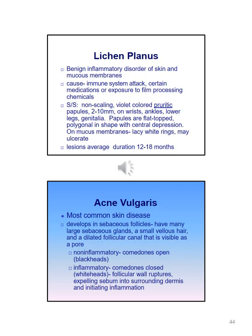Lichen planus is a benign inflammatory disorder of the skin and mucous membranes. The cause is unknown; however, factors that may contribute include an immune system attack, certain medications, or exposure to film processing chemicals. Signs and symptoms include non-scaling, violet-colored, pruritic papules 2 to 10 millimeters in size, usually found on the wrists, ankles, lower legs, and genitalia. The papules are flat-topped and polygonal in shape. On mucous membranes, lacy white rings may be seen which may eventually ulcerate. Lesions average a duration of 12 to 18 months.